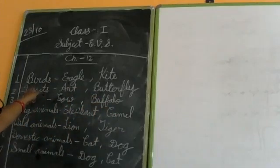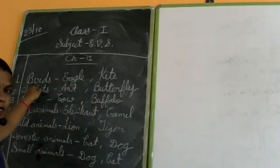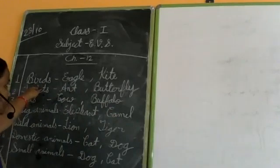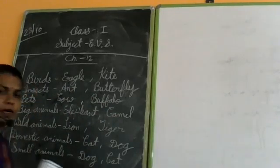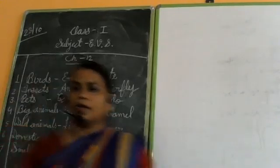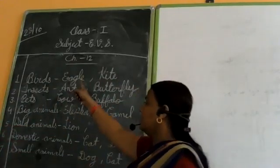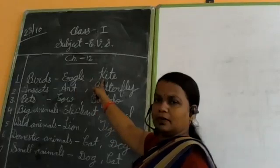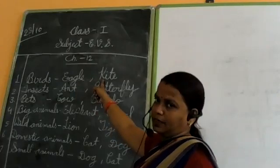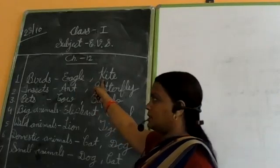First is birds. We have two birds. We have written in birds.